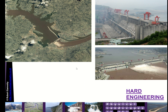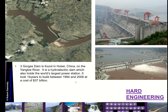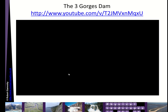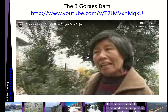Here's an example: the Three Gorges Dam in China, one of the biggest dams in the world. It's a hydroelectric dam and holds the world's largest power station. It took 14 years to build at a cost of 37 billion dollars. It was built to produce power and control floods, and an estimated 1.3 million people were relocated for its construction. It is 181 meters high and over two kilometers across.